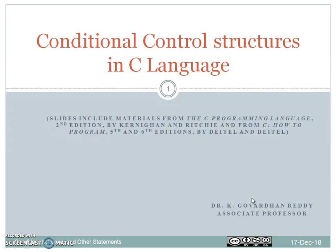Hi, this is Gowardhan, working as associate professor in G Polarity Engineering College. Let us discuss what are all the control structures available in C programming language. The control structures are of two types: conditional control structures and unconditional control structures.